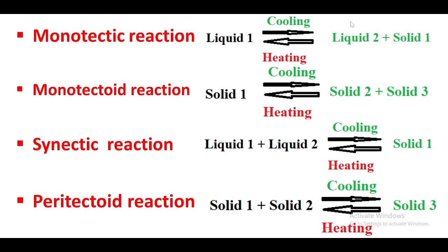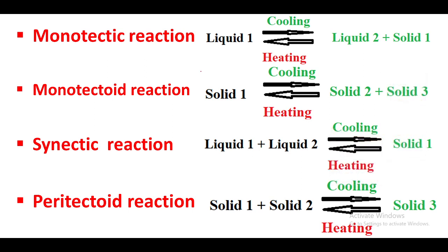There are also various other types of reactions. The monotectoid reaction: one solid is converted to two solids. Another one is the syntectic reaction: two liquids are converted to one solid. The peritectoid reaction: two solids are converted to one solid. These are the peritectoid reactions.